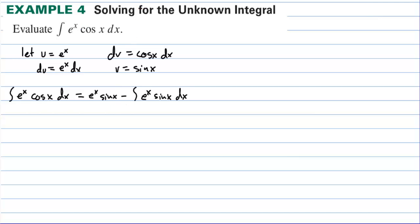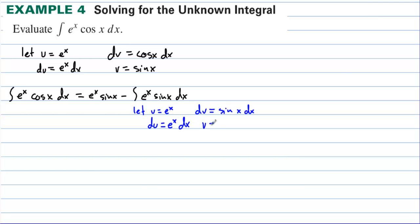Let's do integration by parts again. We let u equal eˣ again, and this time dv equals sine(x) dx. Then du equals eˣ dx, and integrating dv gives v equals negative cosine(x).